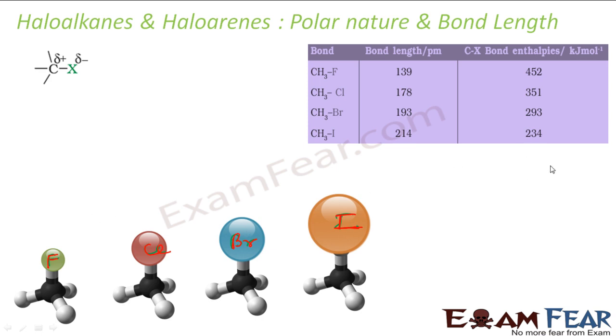And if you see the size increases as we go down the group. Fluorine has this much size, then chlorine will have this much size and bromine will have bigger size and then iodine will have all the more bigger size. This is how it is as we go down the group.